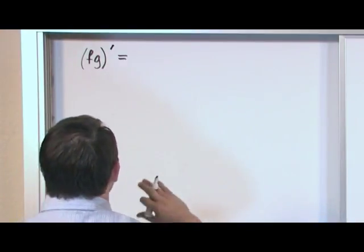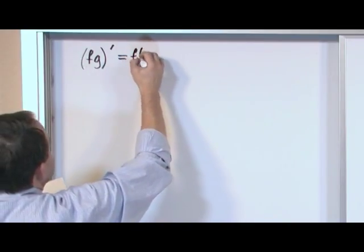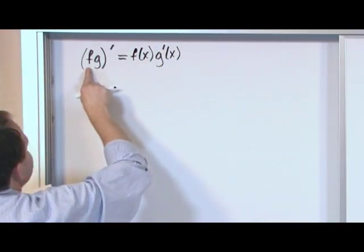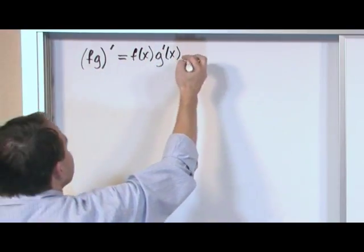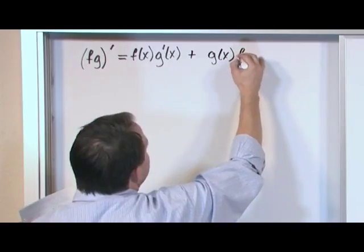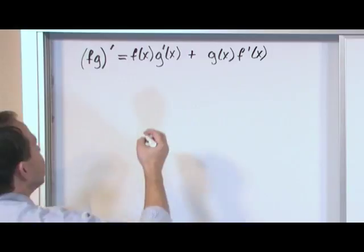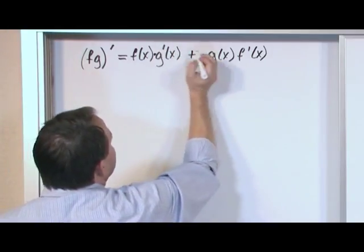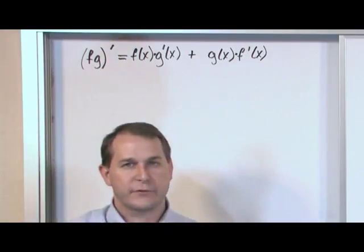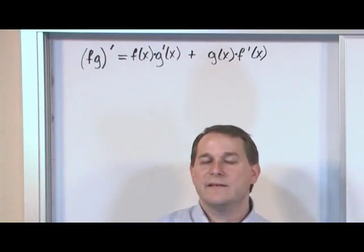I'm going to say this about ten times because I want you to memorize it. You take the first function f(x) and multiply it times the derivative of the second function, plus the second function g(x) times the derivative of the first function f′(x). It's important to remember this because you'll be using the product rule all throughout Calculus 1, Calculus 2 — everywhere — because it's fundamental.